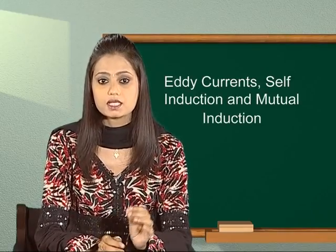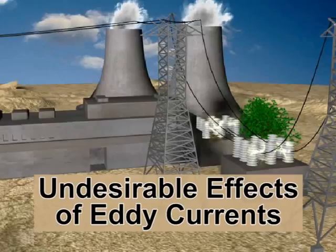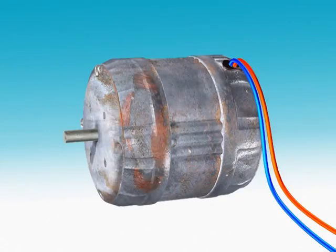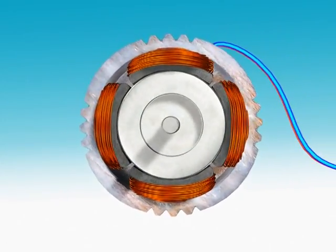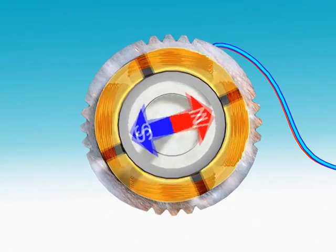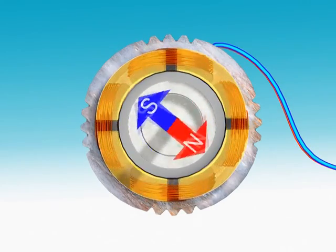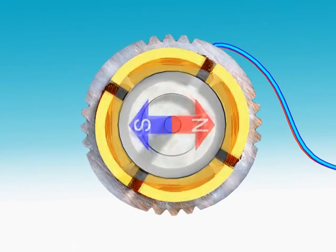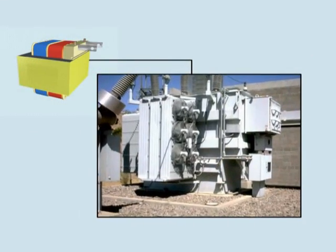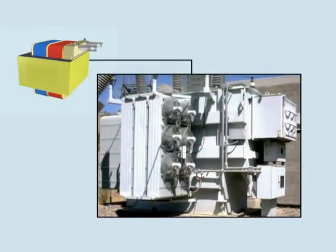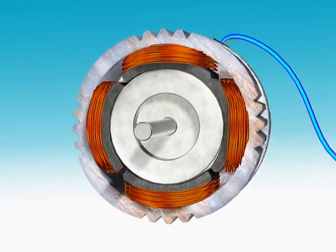Undesirable effects of eddy currents: As the resistance of the conductor is very low, the magnitudes of eddy currents produced are quite large. As such, considerable amount of heat is produced in the conductor due to Joule's heating effect. If large eddy currents are allowed to produce in the core of a transformer, dynamo, etc., it may produce undesirable effects.